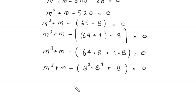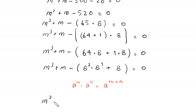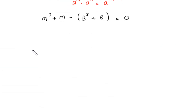Using the property of exponents — a^m × a^n = a^(m+n) — we add the powers 2 and 1 to get 8³. So the equation becomes m³ + m - 8³ - 8 = 0.